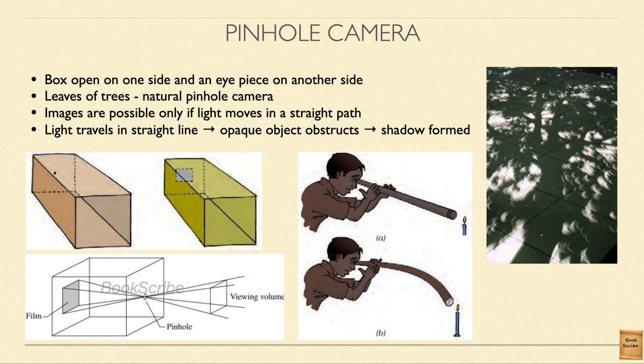Images on the pinhole camera form only if light travels in a straight line. If you roll a cardboard into a pipe and look at a candle, you can see through it. But if you bend the pipe, you can't see the candle's light anymore. So from this, we learn that light travels in a straight line, and that is why when an opaque object blocks the light, a shadow forms.